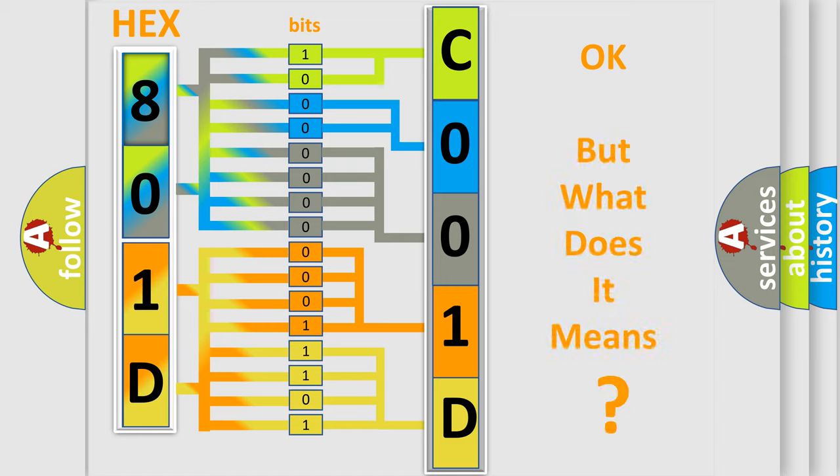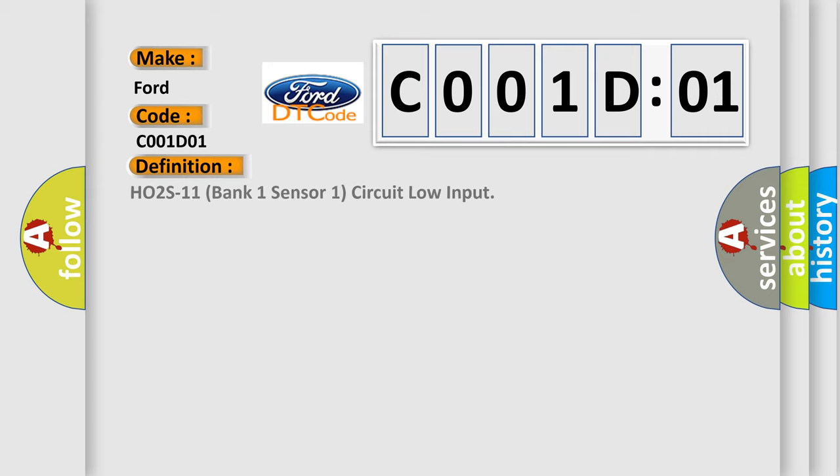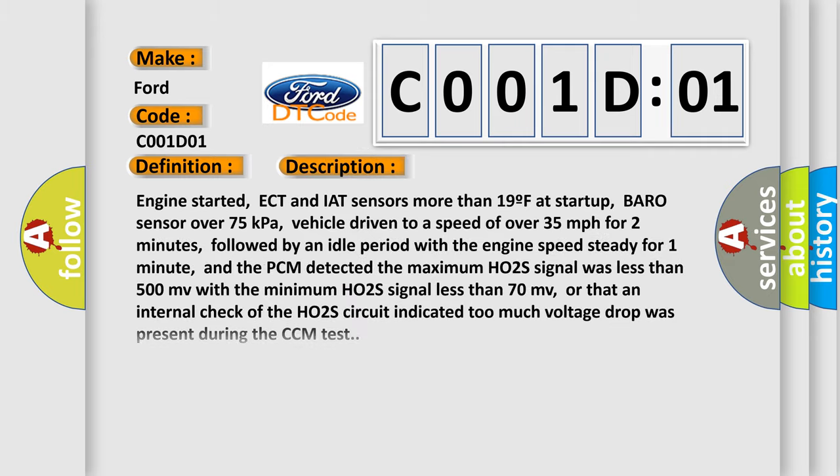We now know in what way the diagnostic tool translates the received information into a more comprehensible format. The number itself does not make sense to us if we cannot assign information about it to what it actually expresses. So, what does the Diagnostic Trouble Code C001D01 interpret specifically for Infinity car manufacturers? The basic definition is HO2S11 Bank 1 Sensor 1 Circuit Low Input. And now this is a short description of this DTC code.